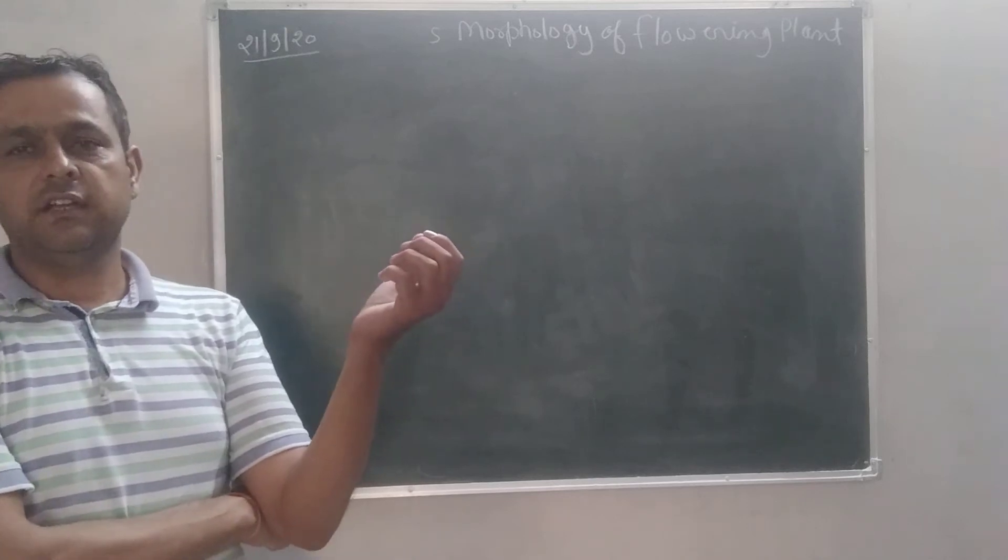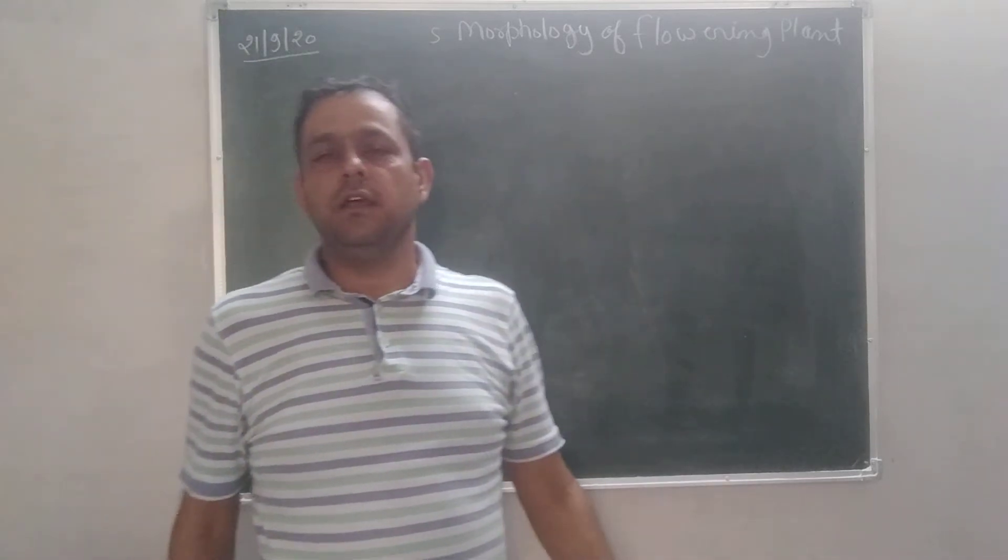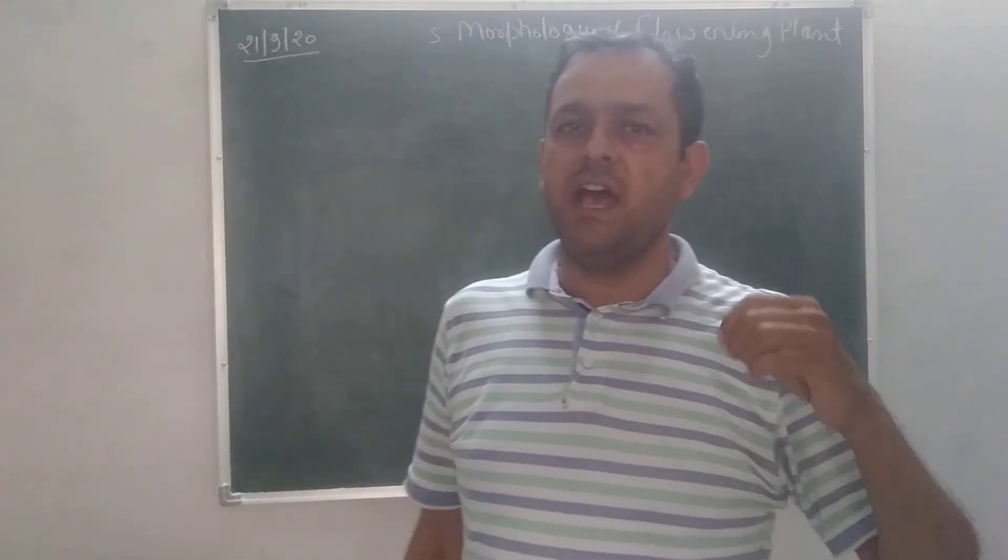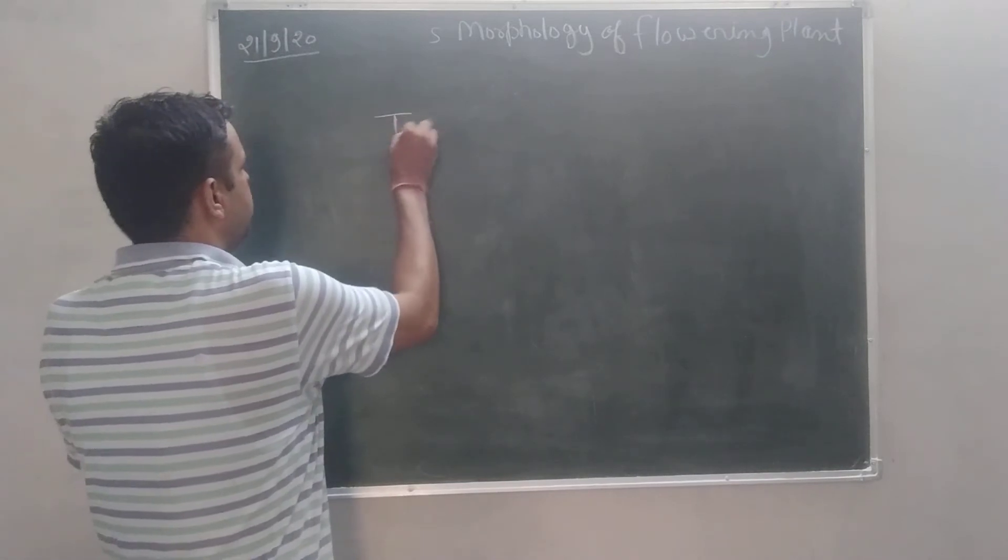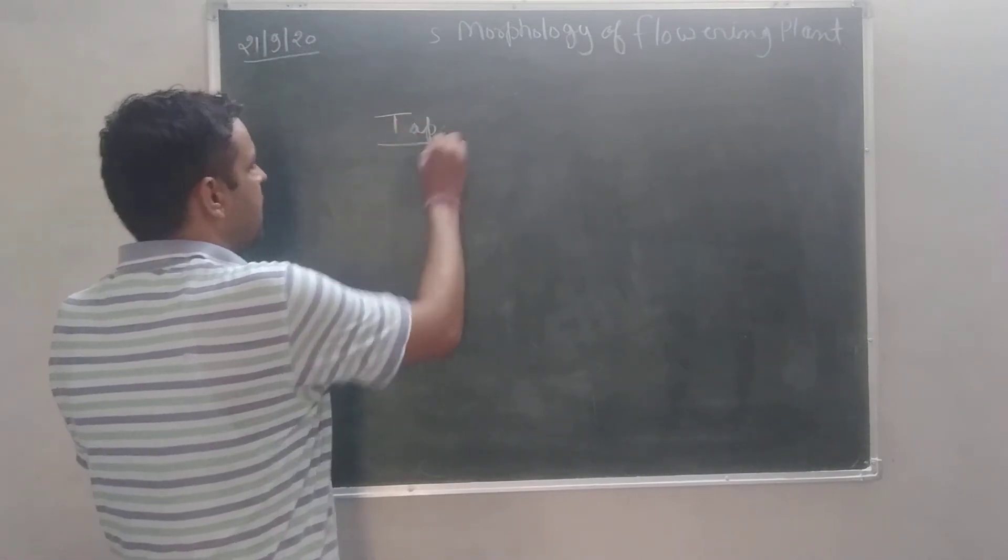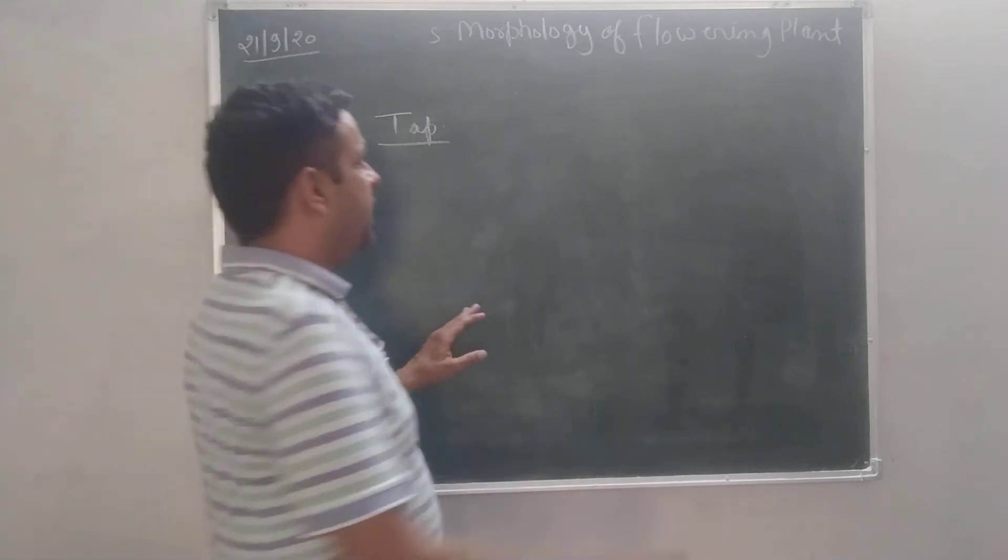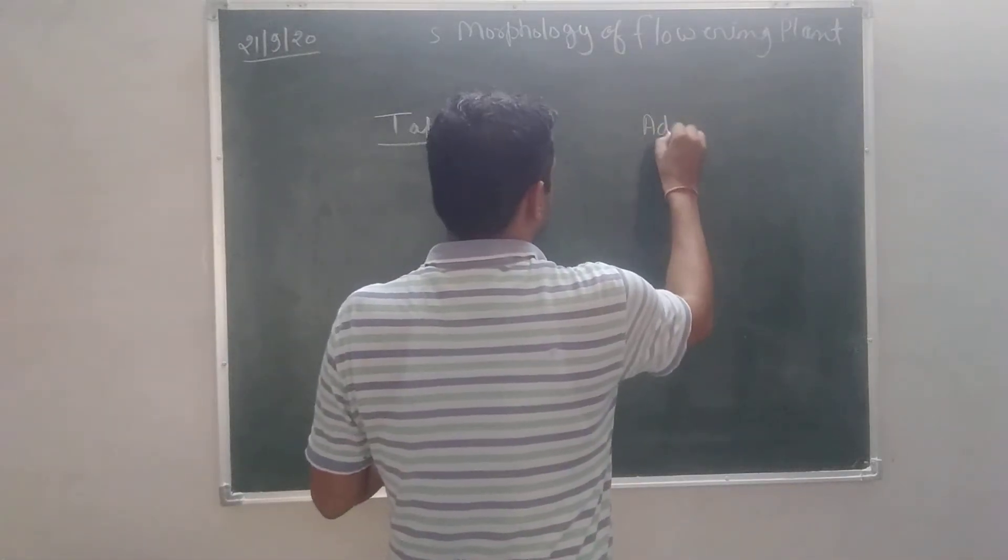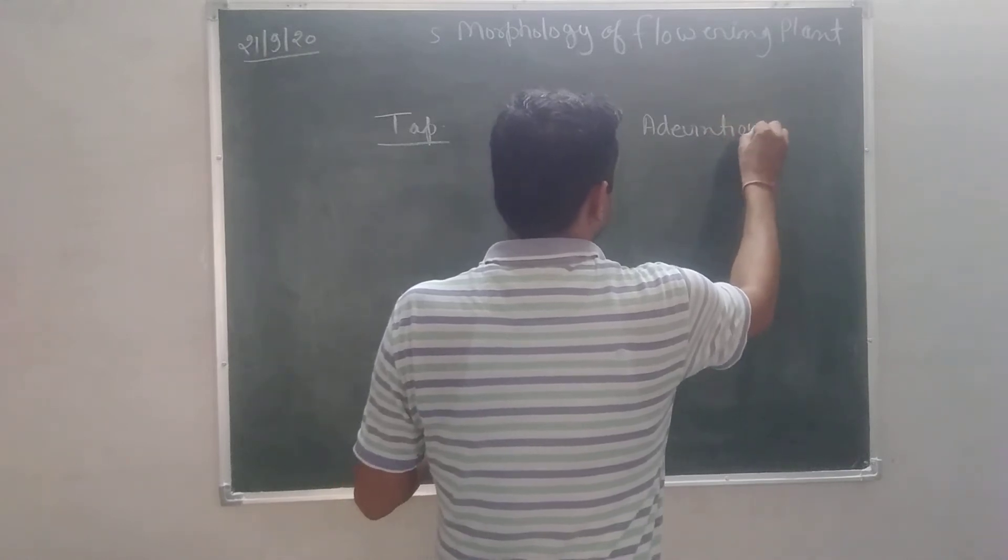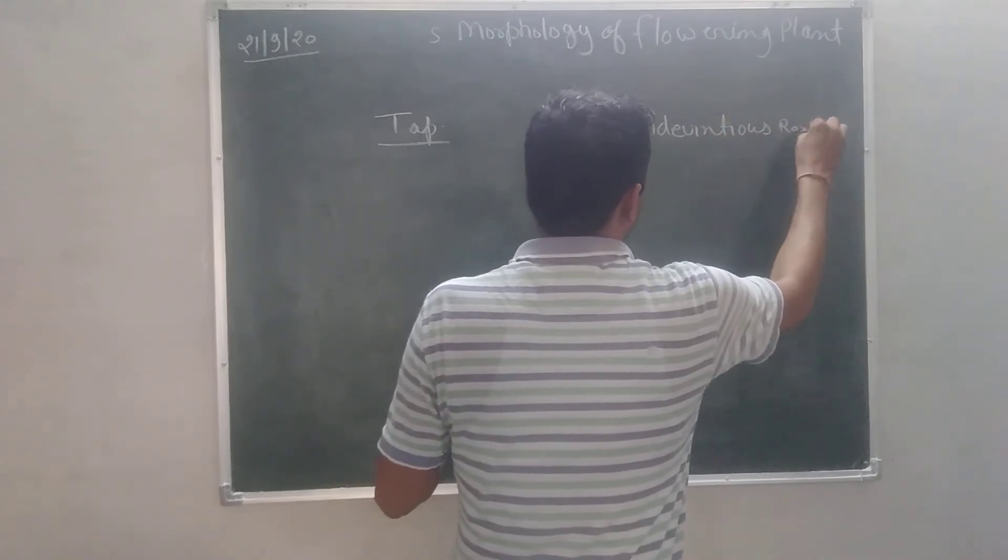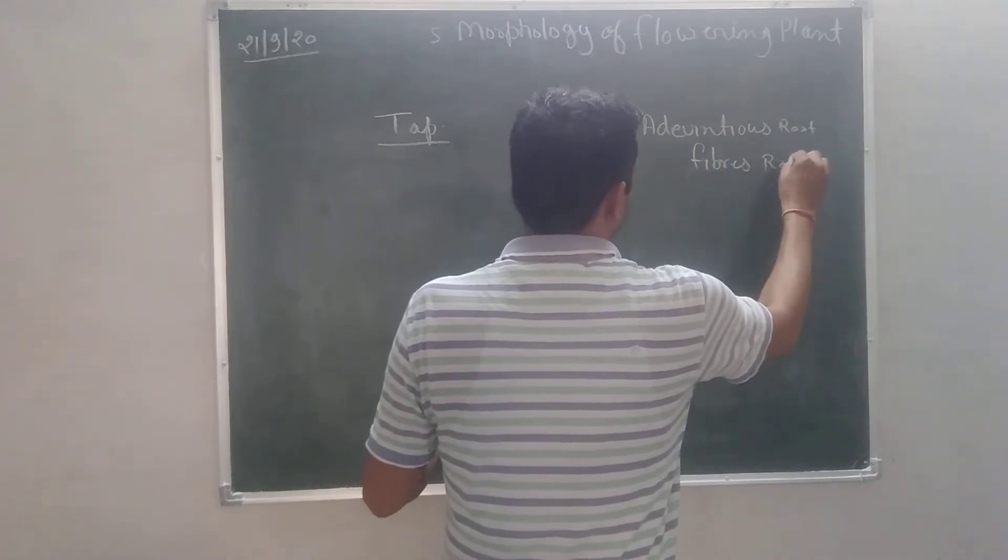Now see the types of root. There are two types of root. Whenever any root arises from a radical, it is called tap root. And whenever any root arises rather than radical, it is called fibrous root or adventitious root.